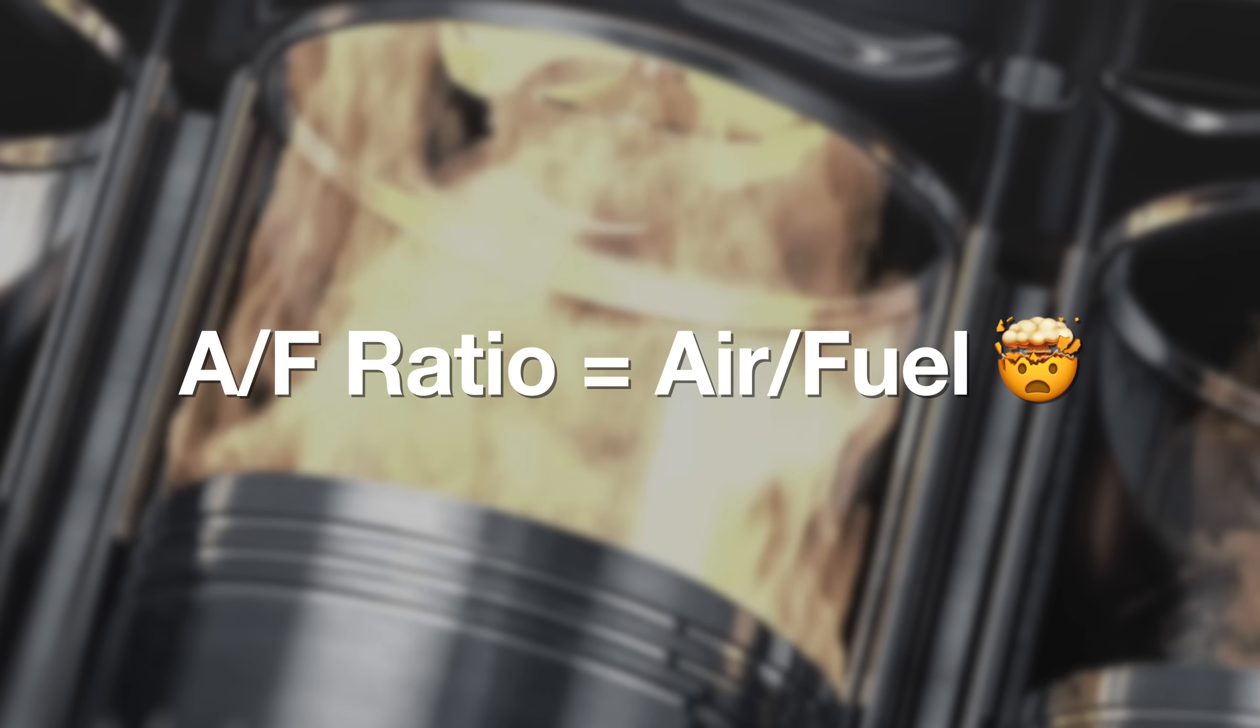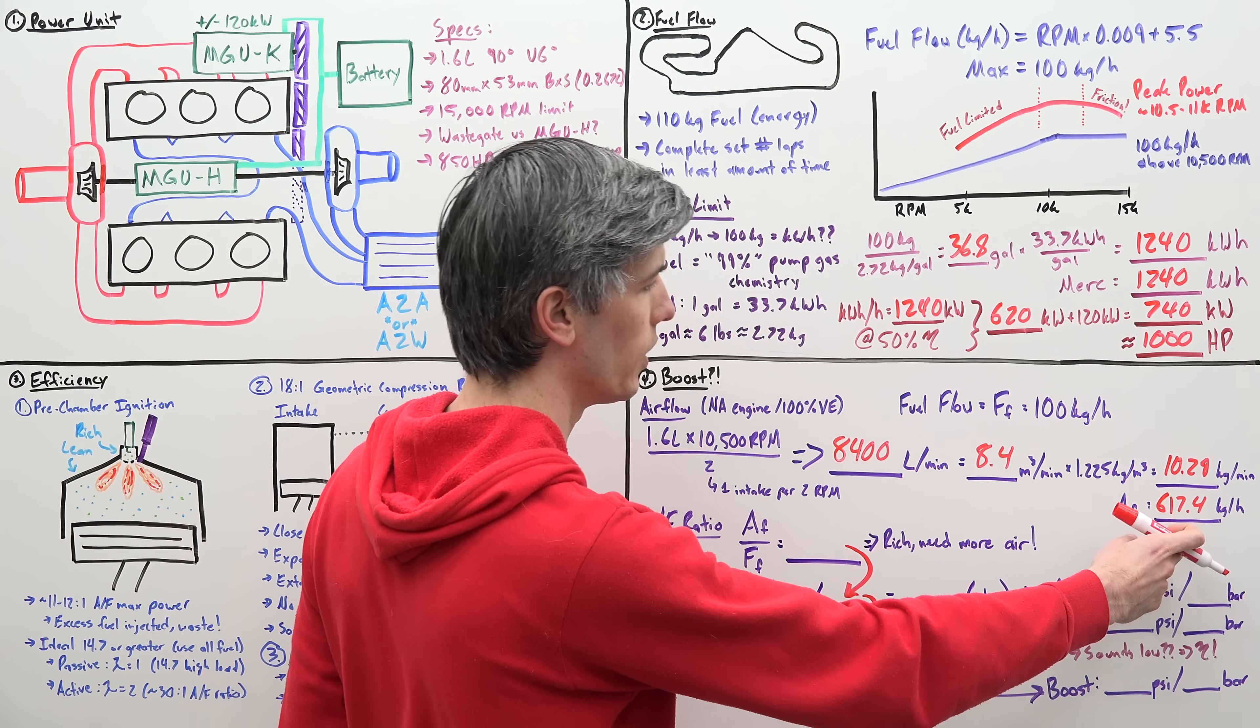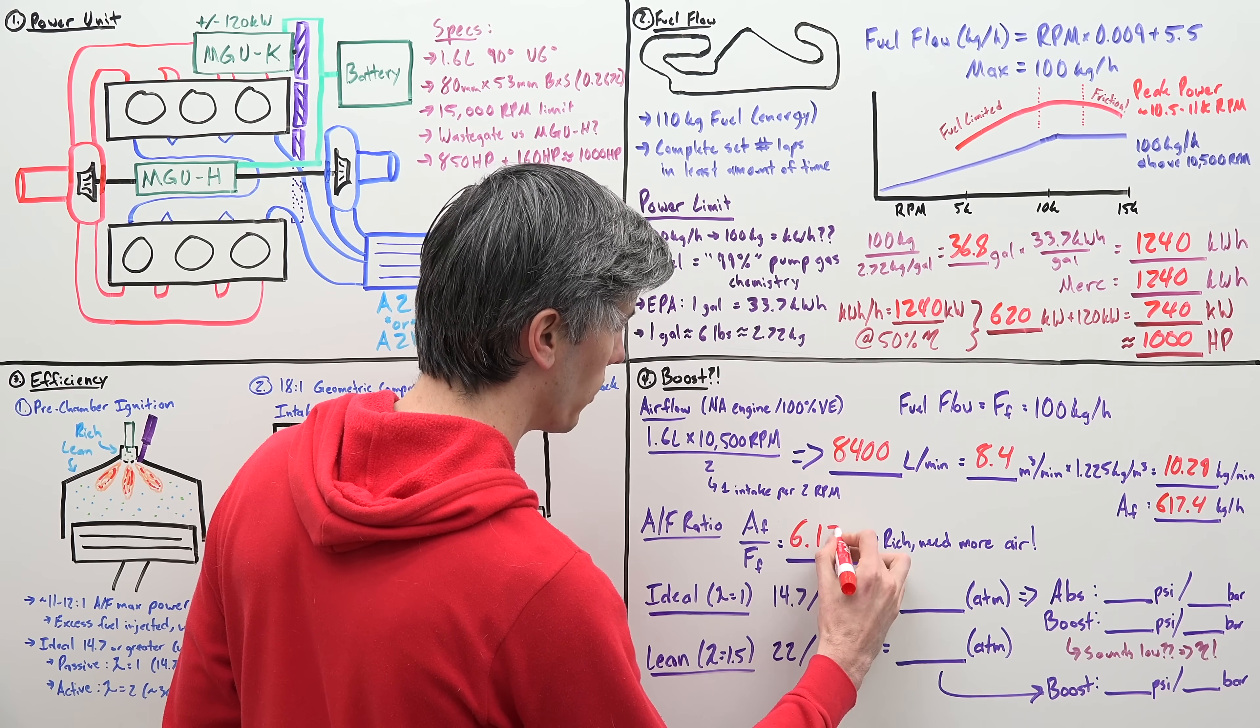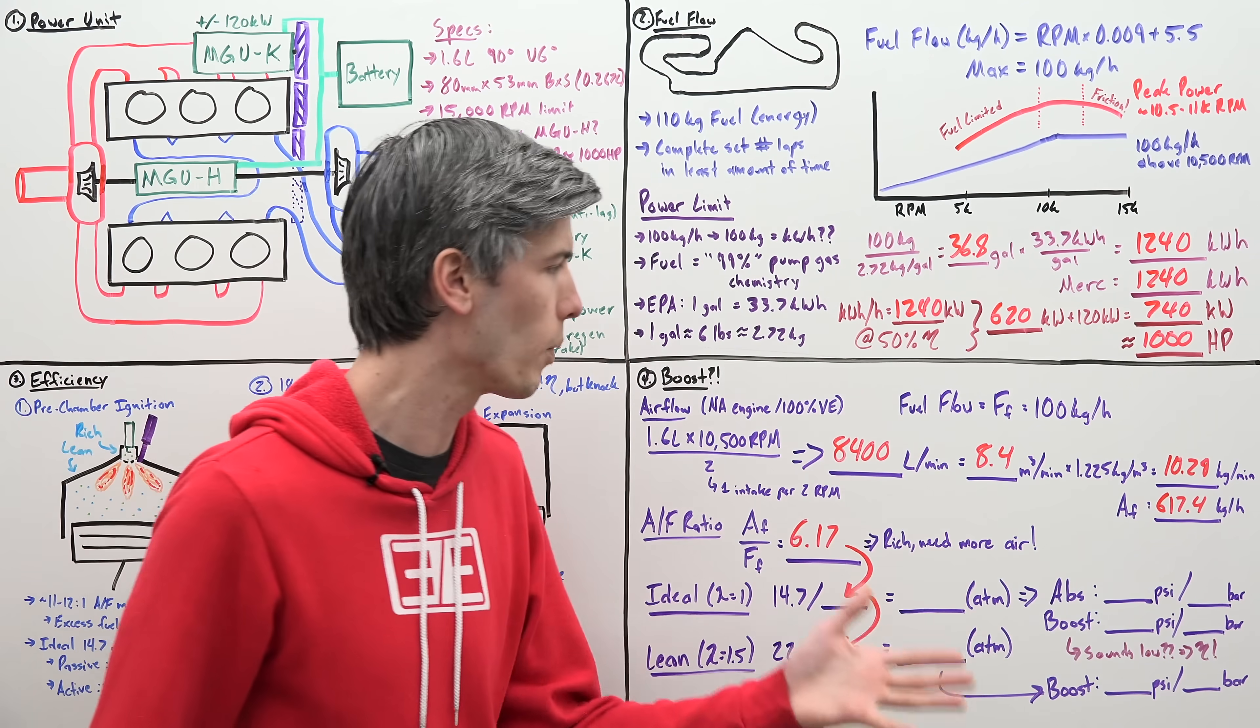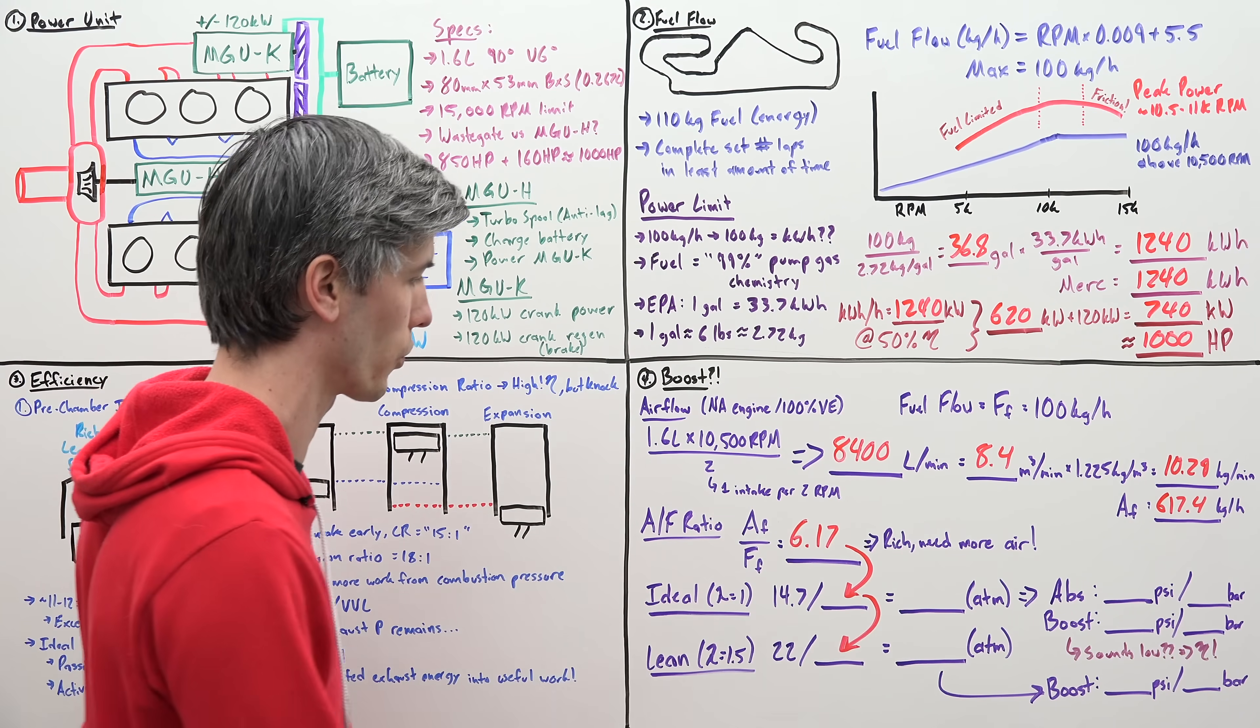Now, we know our fuel flow is 100 kilograms per hour. So, let's get our air flow in terms of kilograms per hour. Simply multiply this by 60 and we get 617.4 kilograms per hour. Okay, so our air fuel ratio is our air flow divided by our fuel flow. So, we have 617.4 divided by 100. That gives us an air fuel ratio of 6.17. Now, this is extremely rich. We're injecting way too much fuel or we need to inject a lot more air using boost, using our turbocharger.